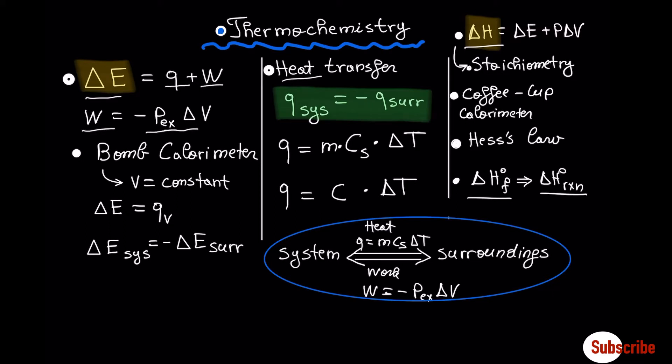Work itself is minus external pressure multiplied by change in volume. The way we measure the change in internal energy is by using a bomb calorimeter, which operates at constant volume. Regarding heat transfer, you have to keep in mind that heat always flows from the matter with higher temperature to the matter with lower temperature.